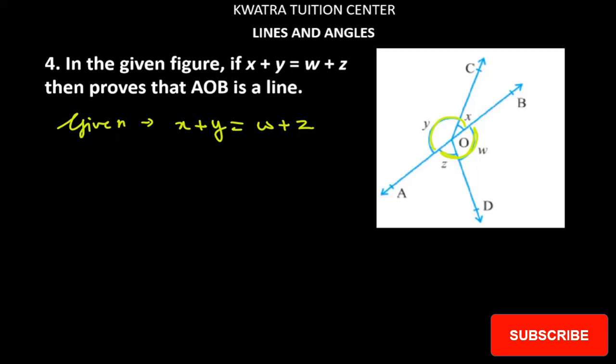And we have to prove that AOB is a line. So we have to prove that this is a line, AOB. So now how do you do it? You can see that we know how much total sum is. If there is a whole circle, it is 360.